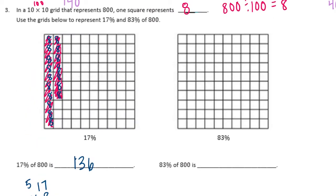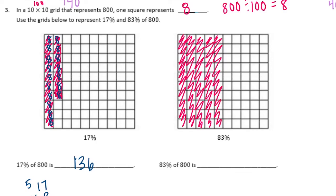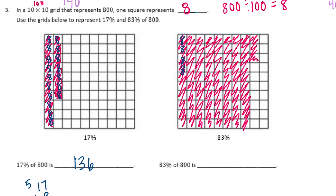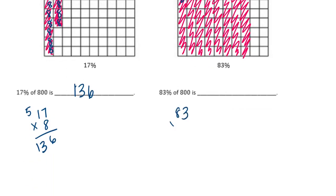And then if we had 83 percent, I'm going to shade in 20, 30, 40, 50, 60, 70, 80, 83. So there's 83 percent. Now remember each one is 8. I'm not going to draw 8 in all 83 of them, but we can do 83 times 8. 3 times 8 is 24, carry the 2. 8 times 8 is 64 plus 2 is 66. So we would have 664 is equal to 83 percent of 800.